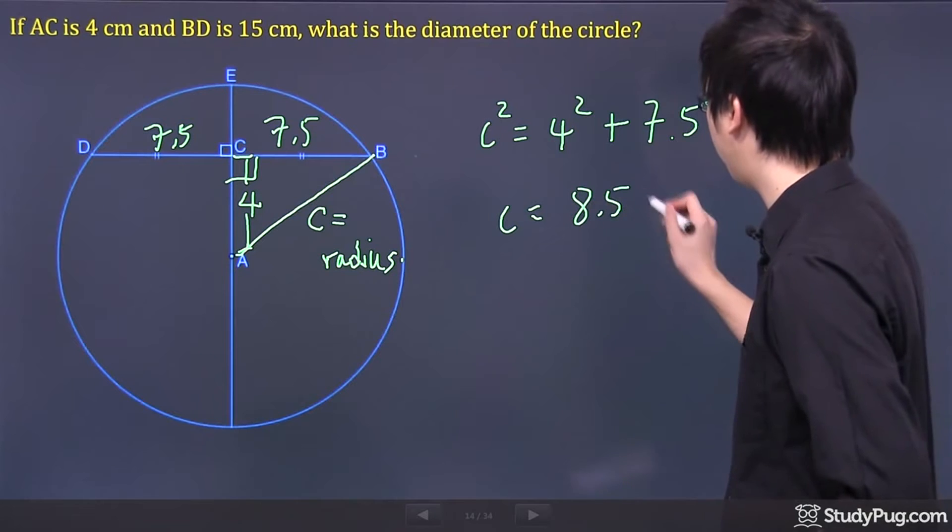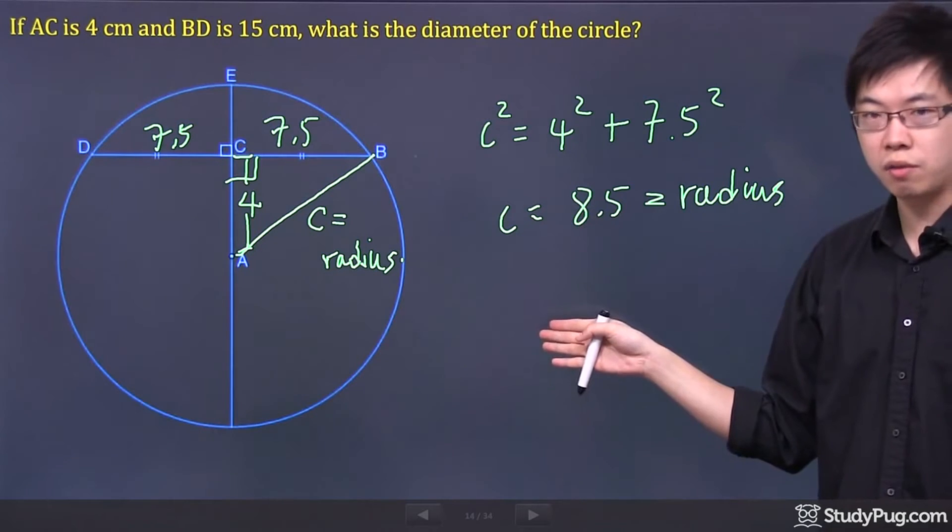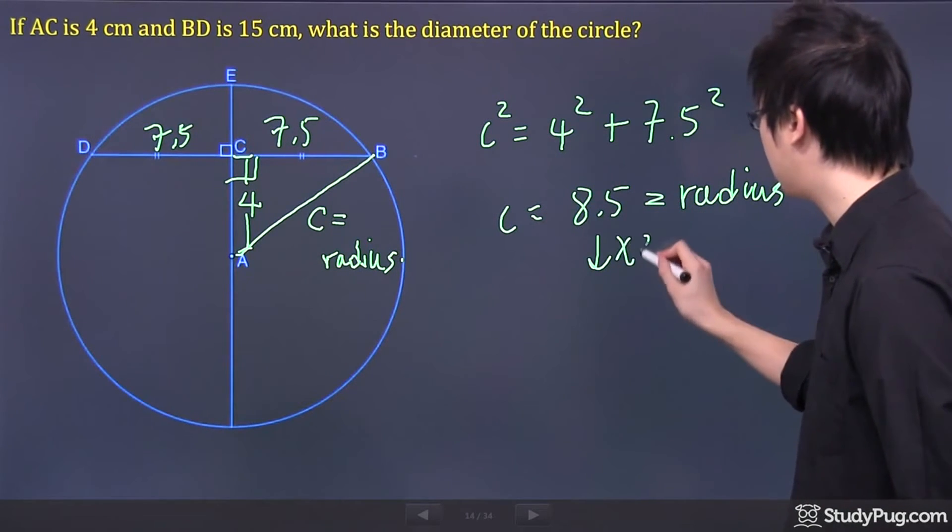I have 8.5. Now remember, this is your radius. So the radius is 8.5. Now what about diameter? Well, why don't we just times by 2?